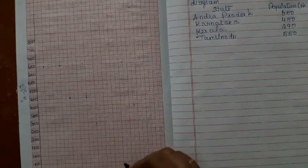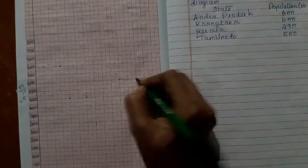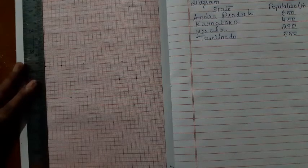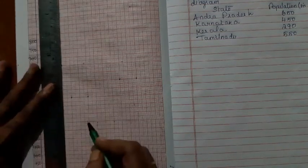And for Tamil Nadu, leave 1 space between 550. I have plotted these values. See, you erect bars of the selected heights.